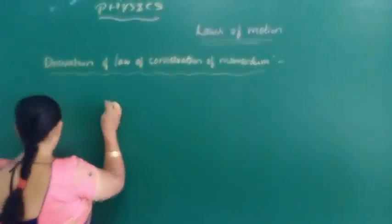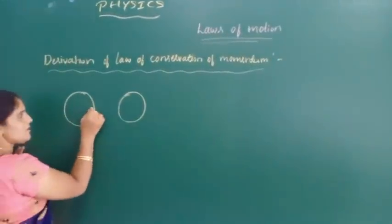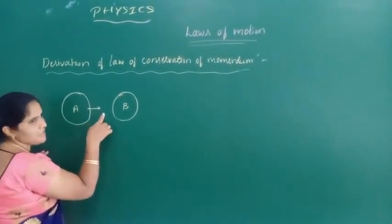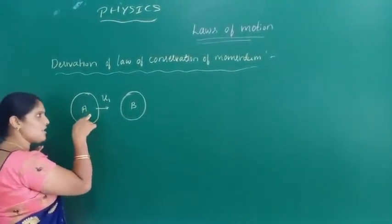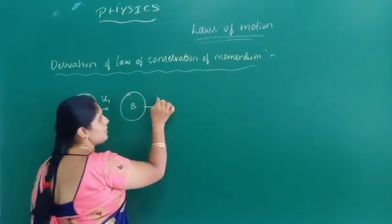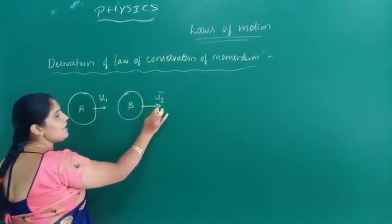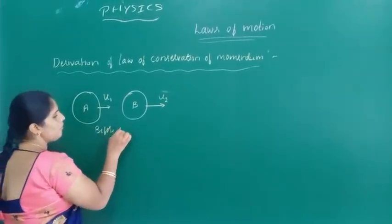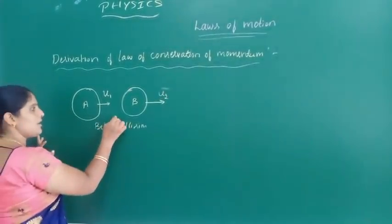For that, let us consider two bodies. Let us call the first body as A and the second body as B. The first body is moving with initial velocity U1. So U1 is the initial velocity of A. The object B is moving with some initial velocity U2. So U1 is the initial velocity of A and U2 is the initial velocity of B. This is the condition before collision.